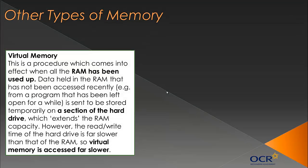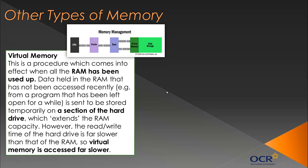Now we've got to look at three different types of other memory, one of which is virtual memory. Virtual memory is a memory management procedure that comes into effect when all the RAM has been used up. Data held in RAM gets put on your hard drive temporarily, extending the capacity of your RAM. However, the read/write time of the hard drive is so much slower than RAM that everything accessed from it is slower. It extends RAM capacity, but at the cost of speed. Data chosen to be sent to disk is often what you haven't used recently.